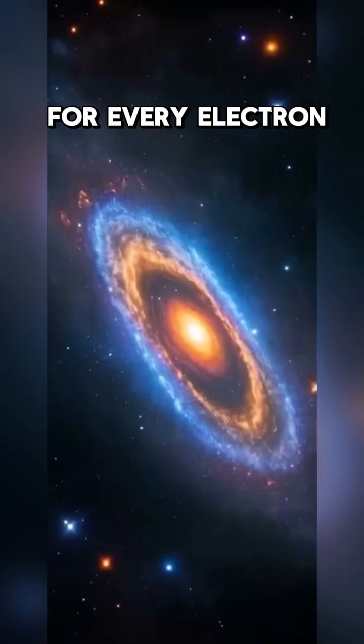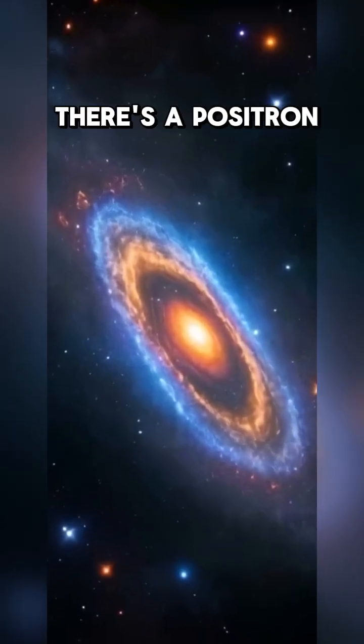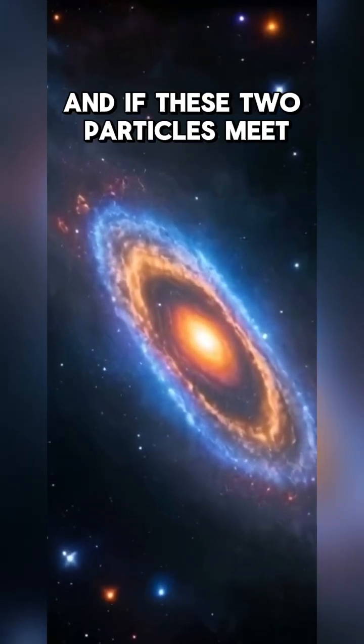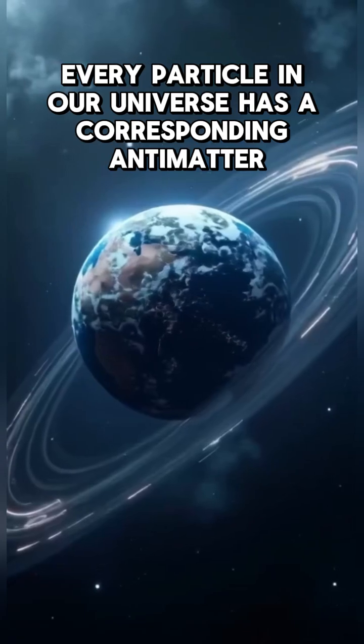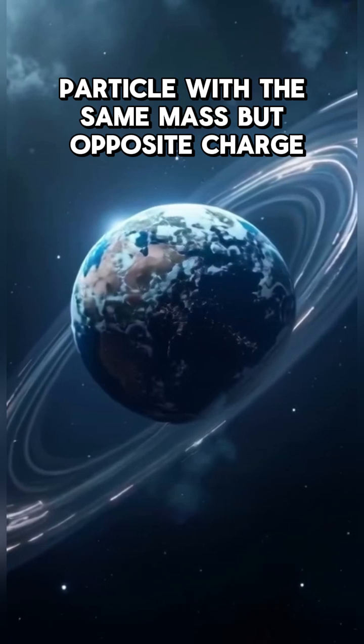Here's what we know. For every electron, there's a positron. And if these two particles meet, they can annihilate each other and release energy. Every particle in our universe has a corresponding antimatter particle with the same mass, but opposite charge.